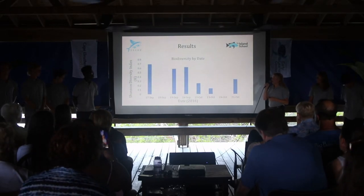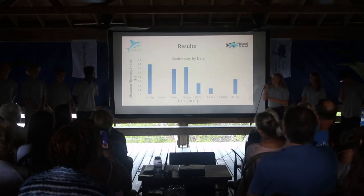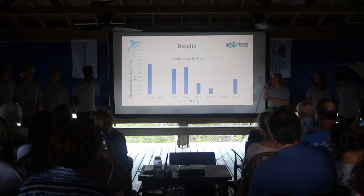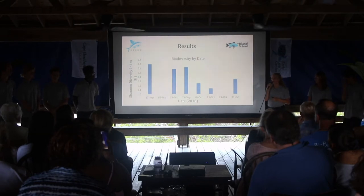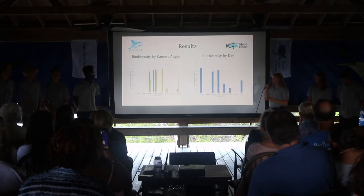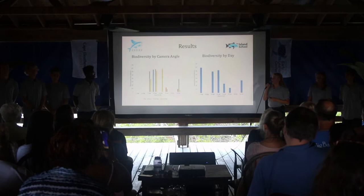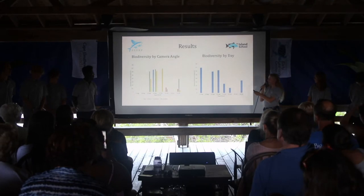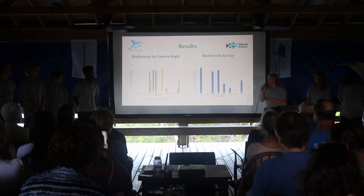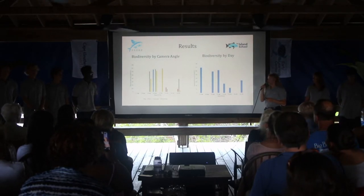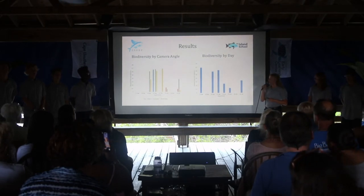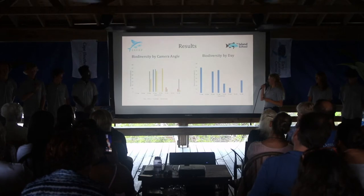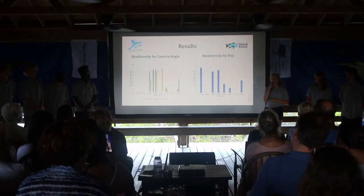This second graph displays biodiversity as a whole, with each bar representing all four camera angles and all recorded species. The x-axis is the date and the y-axis is the Shannon Diversity Index, allowing us to understand total biodiversity on a given day. It is really important to compare both graphs. On September 17th there was a large discrepancy: the first graph showed no biodiversity because each camera recorded only one species, which registers a zero. However, the second graph showed it had the highest level of biodiversity during our study, because it took all recorded species into account.